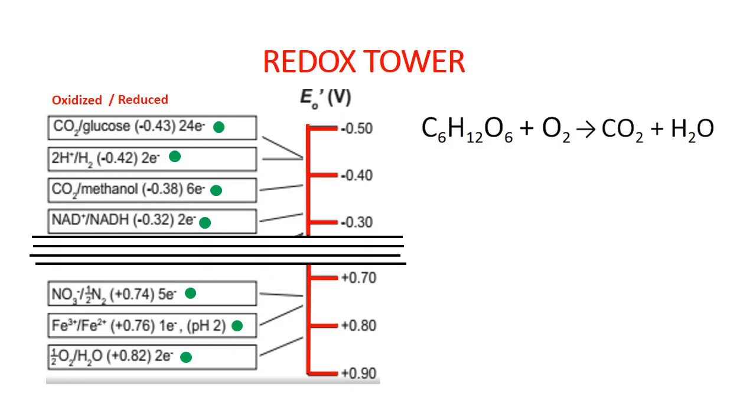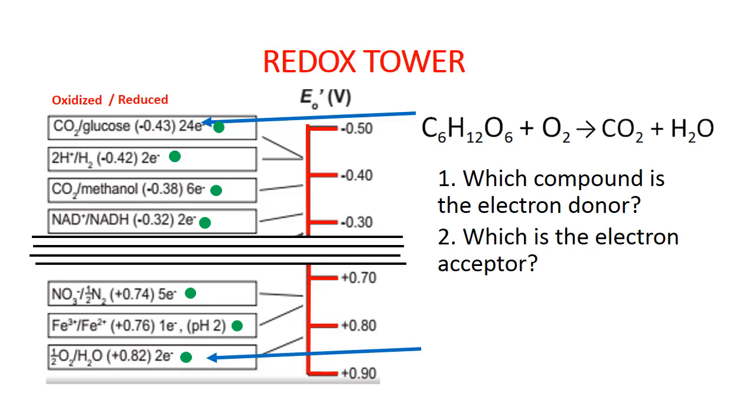Let's look at one more reaction. This is an equation often used to represent the many reactions involved in central metabolism. First, let's find our two half reactions. Glucose is here at the top and oxygen is here at the bottom of this tower. Let's ask our questions again. Which compound is the electron donor and which is the electron acceptor? The glucose half reaction is above the oxygen half reaction. Therefore, the reduced compound of the top half reaction will act as our electron donor.